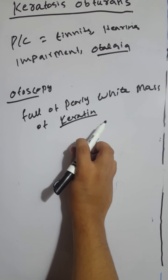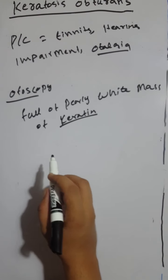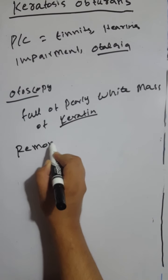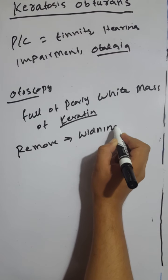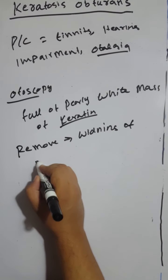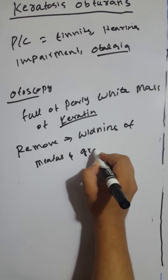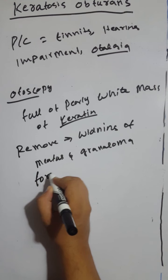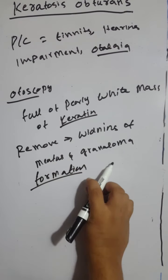Material is disposed in several layers. Removal of this mass may show widening of the bony meatus with ulceration and even granuloma formation. When we remove it, we can see on otoscopy there is widening of meatus and granuloma formation in the ear canal.